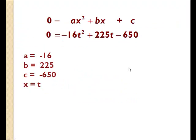Okay, now that my equation is in standard form, let's see what we have in common here. You can see I have an a, so my value of a is going to be negative 16 again. My value for b would be 225 and my value for c would be negative 650. And instead of x, you can see we're now using t.